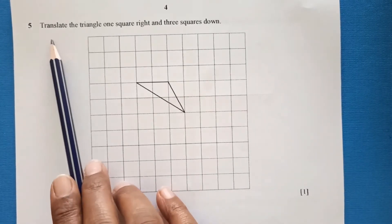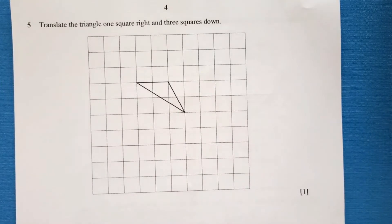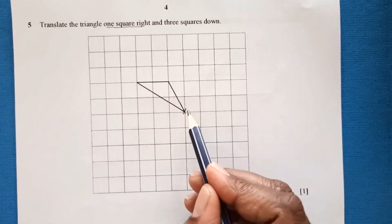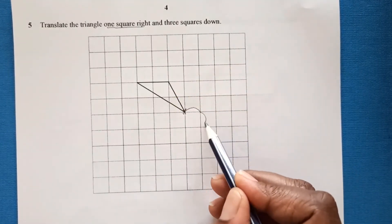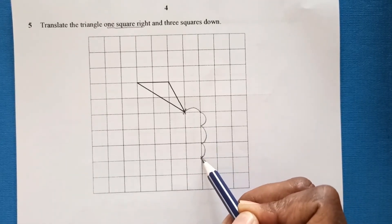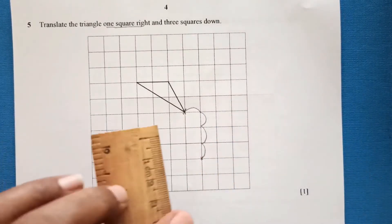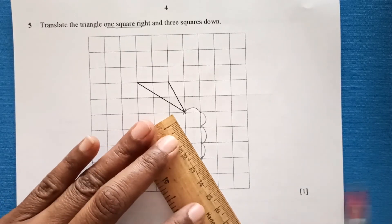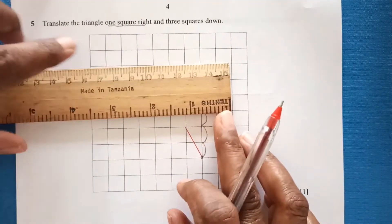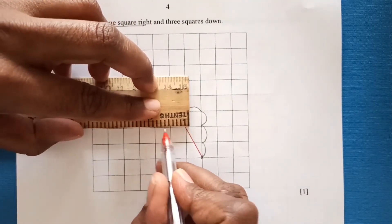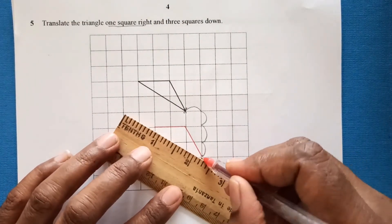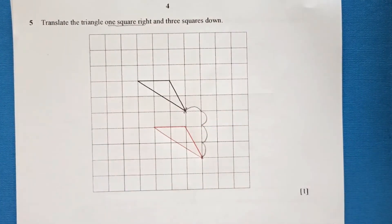Question 5: translate the triangle 1 square right and 3 squares down. We take a point, move it 1 square right and 3 squares down to its new position. The triangle is 2 squares wide, so we mark the other points accordingly, then join all three to draw the new position of the triangle.